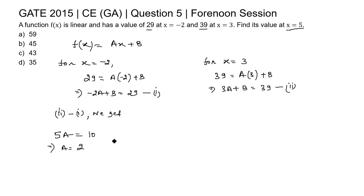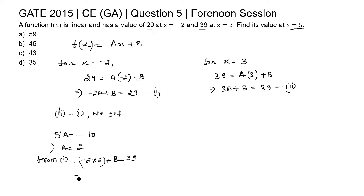Now substituting a equal to 2 into equation 1: minus 2 into 2 plus b equals 29. So minus 4 plus b equals 29, which gives b equal to 29 plus 4, therefore b equal to 33. We now have a equal to 2 and b equal to 33.